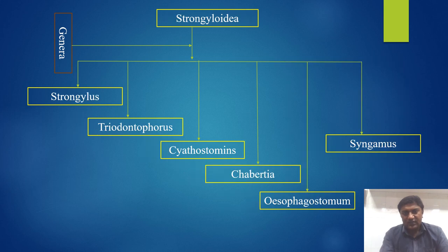The Strongylidae have the following genera: number one is Strongylus, Triodontophorus, Cyathostomines, Chabertia, Oesophagostomum, and Syngamus.